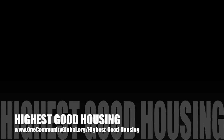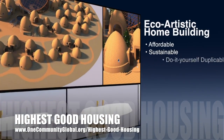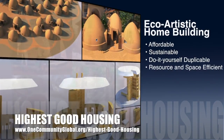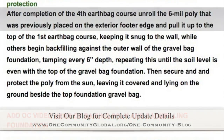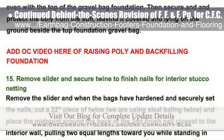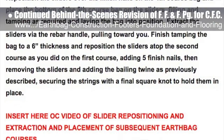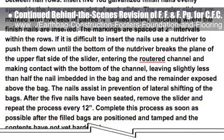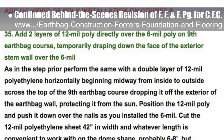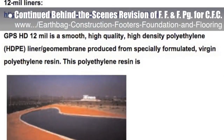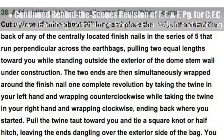OneCommunity's approach to highest good housing is eco-artistic home building that is affordable, sustainable, do-it-yourself duplicable, resource and space efficient, and consists of seven different sustainably constructed village models. This last week the core team put another 10 hours into the behind-the-scenes revision for the footers, foundations, and flooring page for our crowdfunding campaign. This week's focus was on Section 10, analyzing chronological procedural steps 1 through 41 for accuracy, grammar, and sentence structure. We also changed locations of steps 33 to 39 due to the addition of 6 mil and 12 mil layers on EarthBag Course 9 instead of Course 8, due to relocation of the backsplash from EarthBag Course 8 to Course 9.